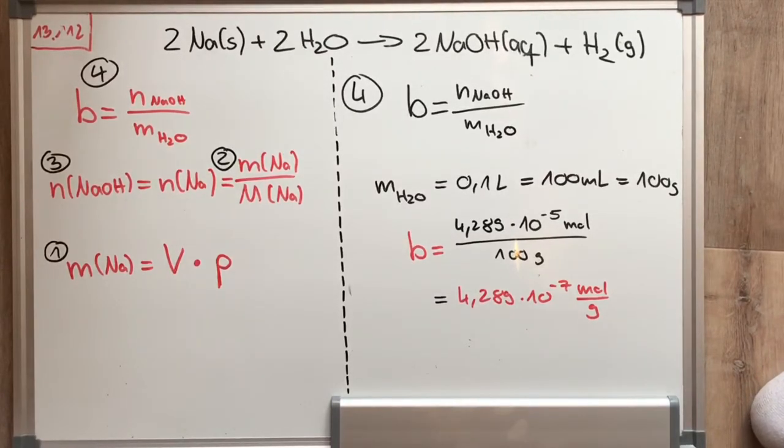And as you can see on the right side on the whiteboard, if you put in all the facts we calculated in the steps before, we get a molality of 4.289 × 10^-7 mol/g.